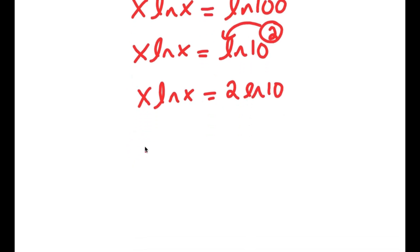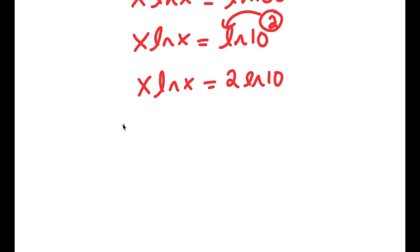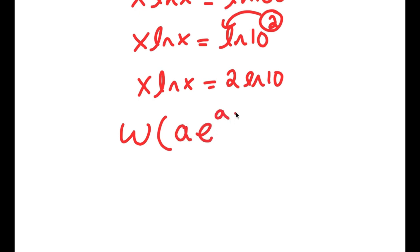Now, there's something called the Lambert W function. If I take the Lambert W function of something in the form a times e to the power of a, this is going to equal a. So basically, if there's something in the form a times e to the power of a, that's going to equal a.